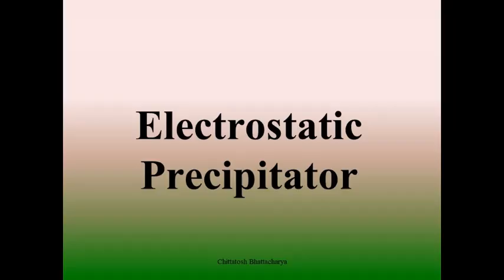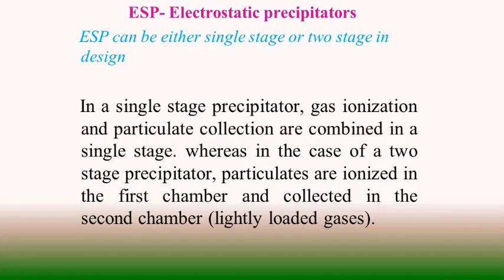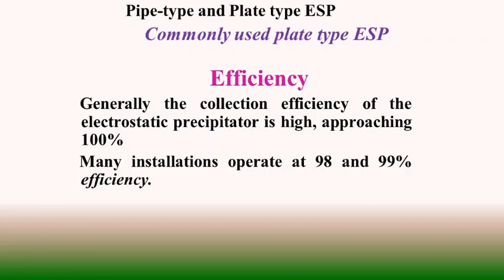The next type of dust separation and collection system is the electrostatic precipitator. An ESP can be either single stage or two stage. In a single stage precipitator, gas ionization and particulate collection are combined in one stage. In a two-stage system, particulate ionization occurs in the first chamber and collection in the second. There are two types of ESPs: pipe type and plate type, but plate type ESPs are mostly found in industries. The efficiency of an ESP is very high — most installations operate between 99 to 99.9% efficiency.